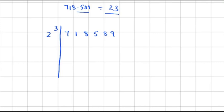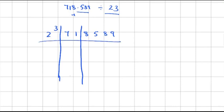To separate the remainder part, look at the decimal point. Before the decimal point, there is one digit: 8. So draw a vertical line before that digit, placing the 8 under the remainder portion. These digits to the right form your remainder portions.